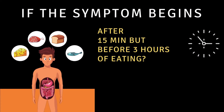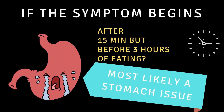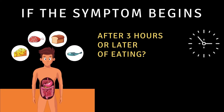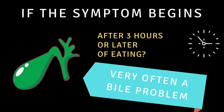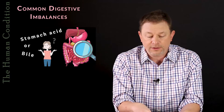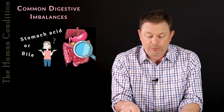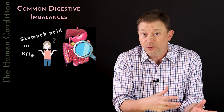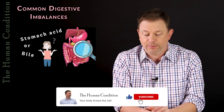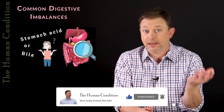So if your symptoms begin after 15 minutes but before three hours after eating a full meal, you probably have a stomach symptom, usually high up in the abdomen. If a symptom begins three hours after a meal or later, involving churning lower in the abdomen and ending in flatulence, that is more likely a bile problem involving the production, storage, release, and quality of bile. If a person has a bile problem, very often they have a stomach acid problem too, but plenty of people have a stomach acid problem without a bile problem.